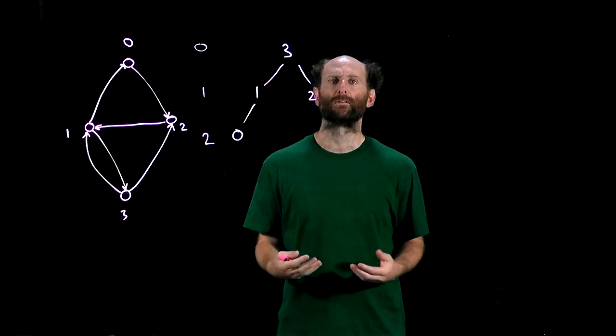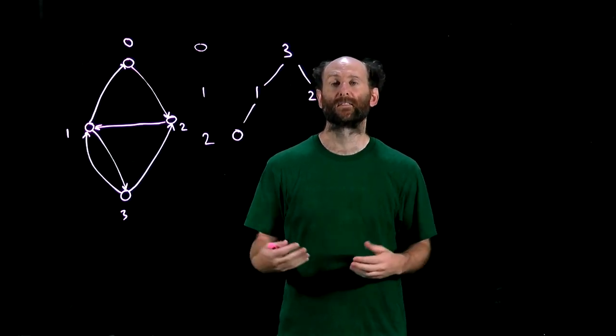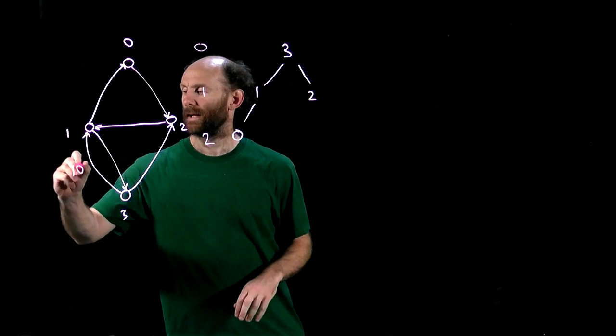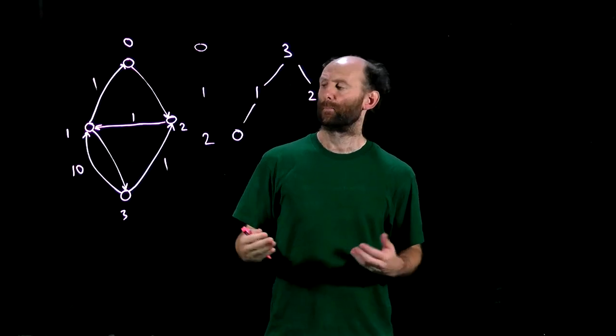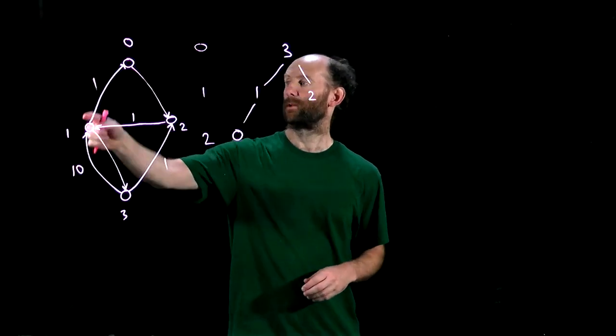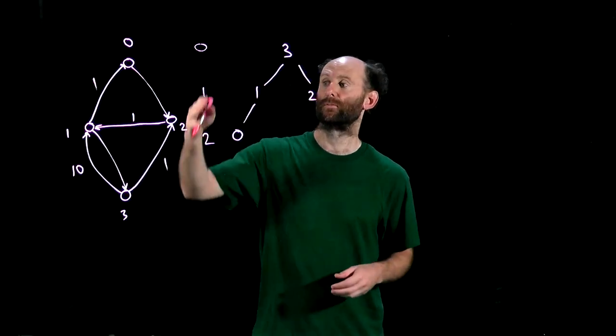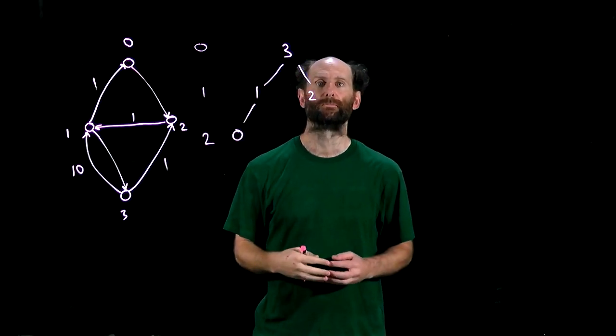So in a weighted digraph the BFS method typically fails since it counts distances in arcs not in weights. So in this example if we had weights a large weight here and smaller weights here the best path from 3 to 0 would be this longer one but the BFS method would always find the one that's shortest in terms of arcs and produce the same tree so it would come up with the wrong solution. So it's clear that in weighted digraphs the problem is harder so let's concentrate on finding just a single row in the matrix rather than the whole matrix.